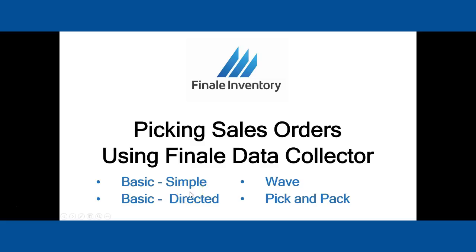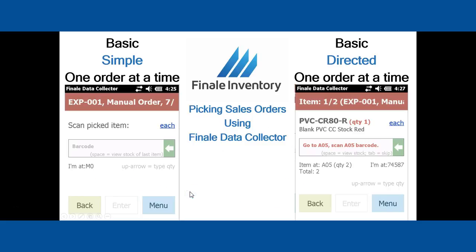Let's cover the basics of just the differences. BASIC SIMPLE means you're going to pick one order at a time. You would be choosing the order that you wish to pick, and it's going to ask you to scan an item. It's not going to tell you where to go or any other information — it's just a basic pick function. That's called BASIC SIMPLE.